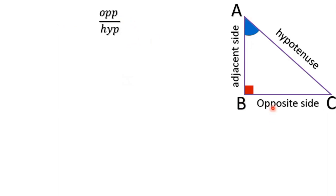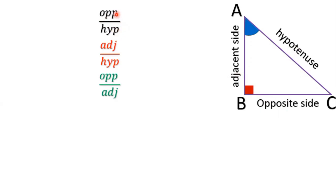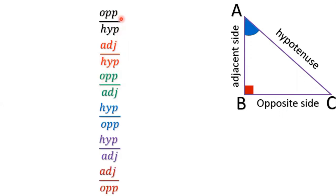Now write the ratio of the sides. We can write opposite by hypotenuse, adjacent by hypotenuse, opposite by adjacent, and after that write the reciprocals: hypotenuse by opposite, hypotenuse by adjacent, then adjacent by opposite. So these many ratios we can write in this right triangle — we can write 6 ratios.